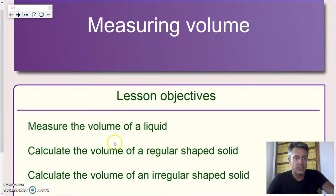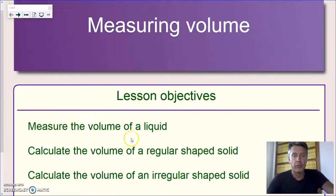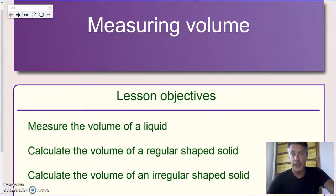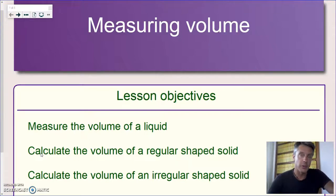Today we're going to see how we can calculate the volume of a regular shaped solid, then move on to how we can measure the volume of a liquid, and finally put these two pieces of knowledge together to calculate the volume of an irregular shaped solid. I really want to stress the difference between measuring — where you directly use a measuring tool to find a quantity — and calculation, which is an indirect measurement where you combine multiple measurements to get your result.